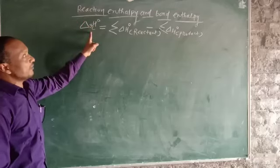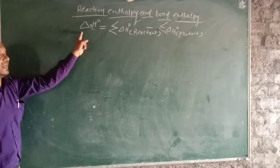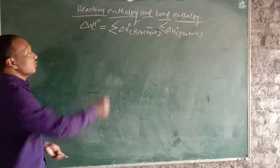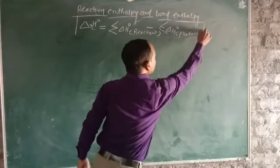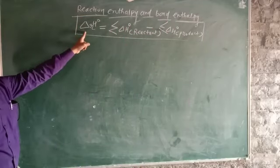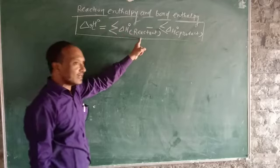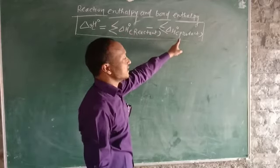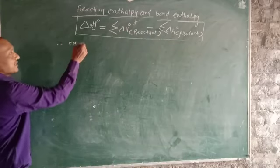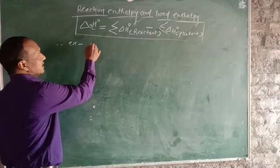The reaction enthalpy is equal to bond enthalpy. So ΔrH° means reaction enthalpy. This is a very important formula: ΔrH° = summation of ΔH° of reactants minus summation of ΔH° of products.